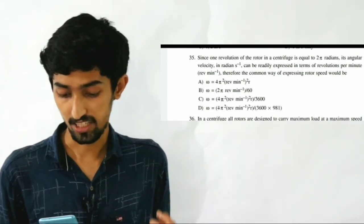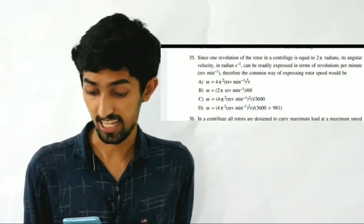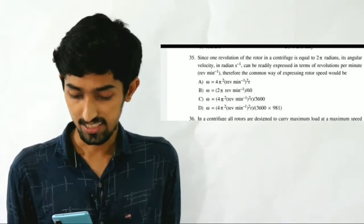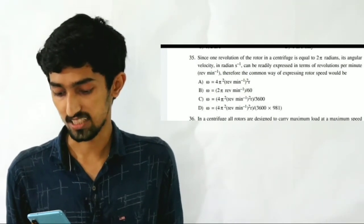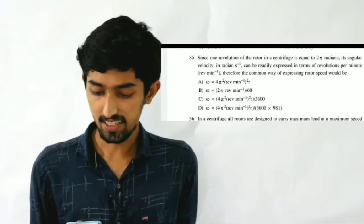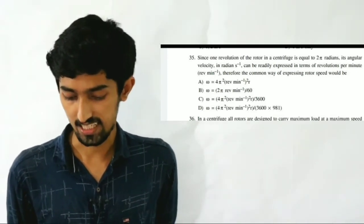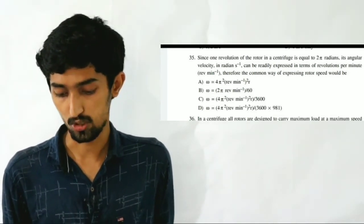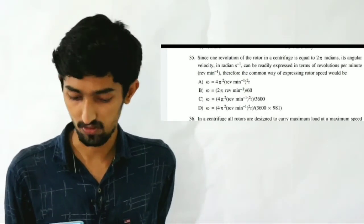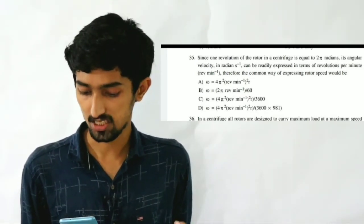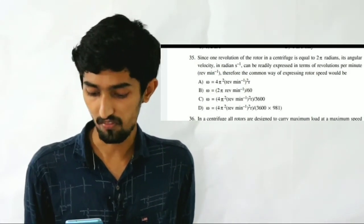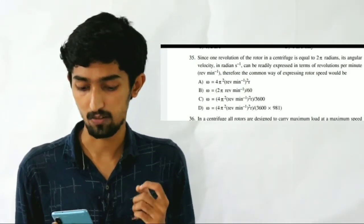The angular velocity can be readily expressed in terms of revolutions per minute. Since one revolution of the rotor in a centrifuge is equal to 2π radians, its angular velocity in radians per second inverse can be readily expressed in terms of revolutions per minute. The common way of expressing rotor speed follows from this.